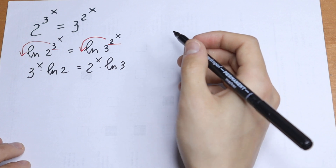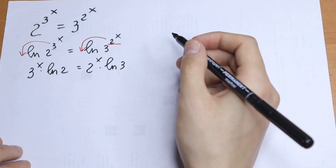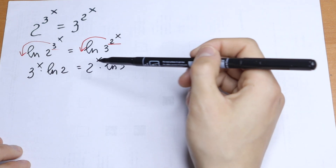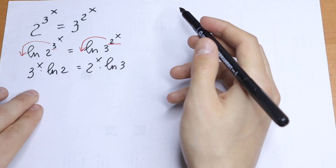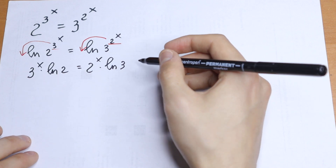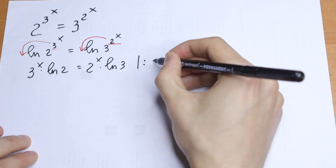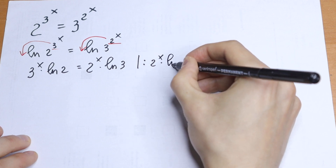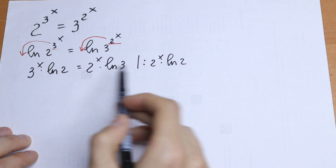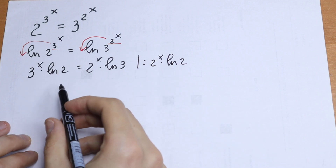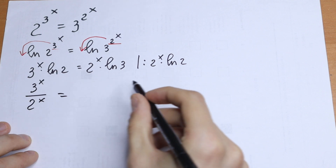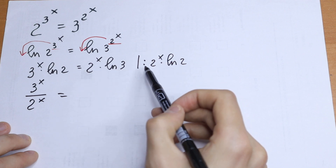Really good simplifying trick. Now we divide both sides by natural log 2 and 2 to the power x, because we need x terms on the left and log values on the right. On the left, natural log 2 cancels, leaving 3 to the power x over 2 to the power x. On the right, 2 to the power x cancels as well.